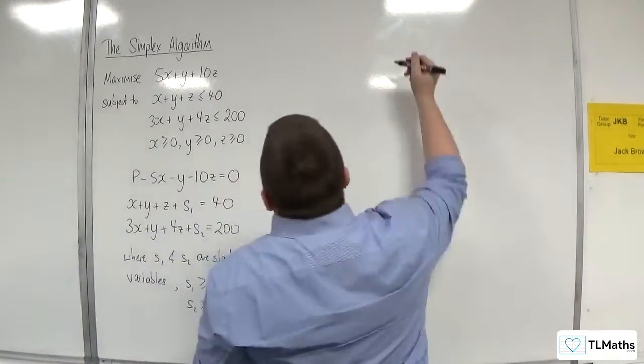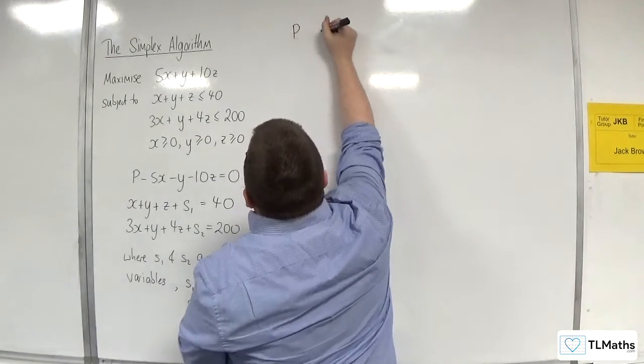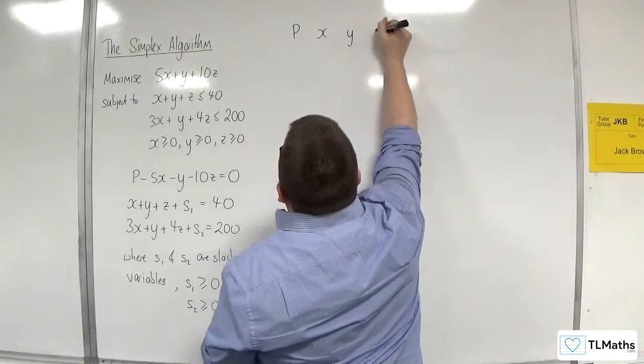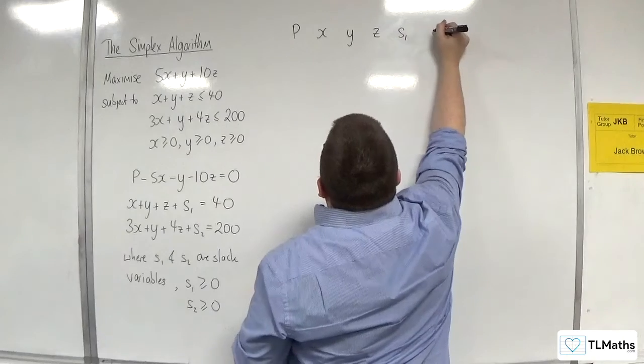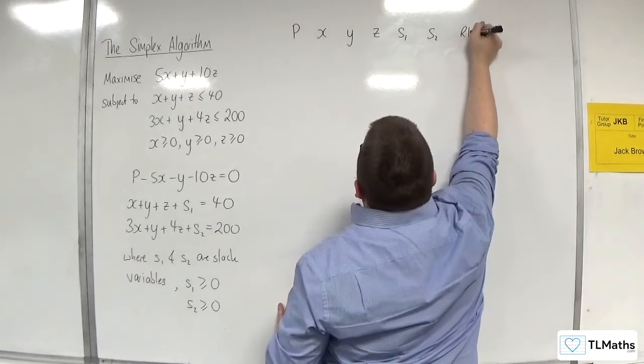Okay, so let's go into the tableau. So we'll have p, x, y, z, s1, s2, and the right-hand side.